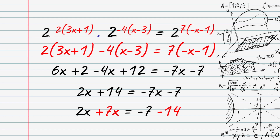That means we now have a linear equation. We expand: 2 squared times 2 squared equals 2 times 3x, giving us 6x, and 2 times 1 gives us 2. Then minus 4 times x gives minus 4x plus 20, and minus 7 gives minus 7x minus 7.